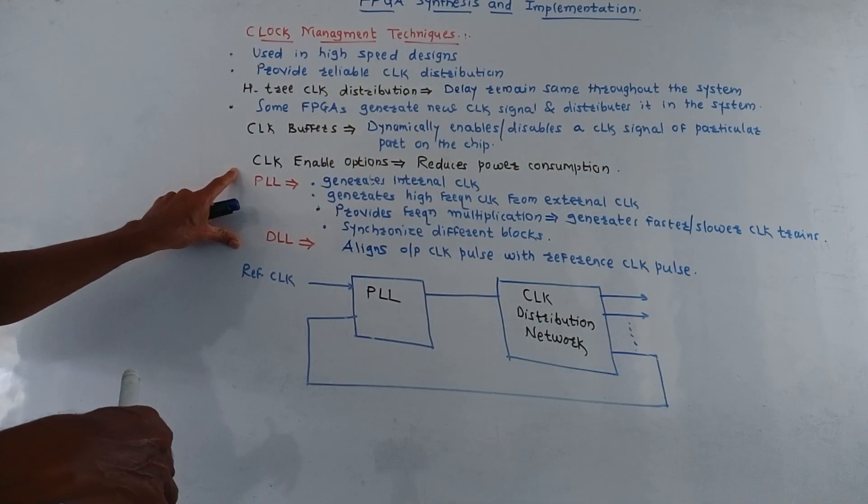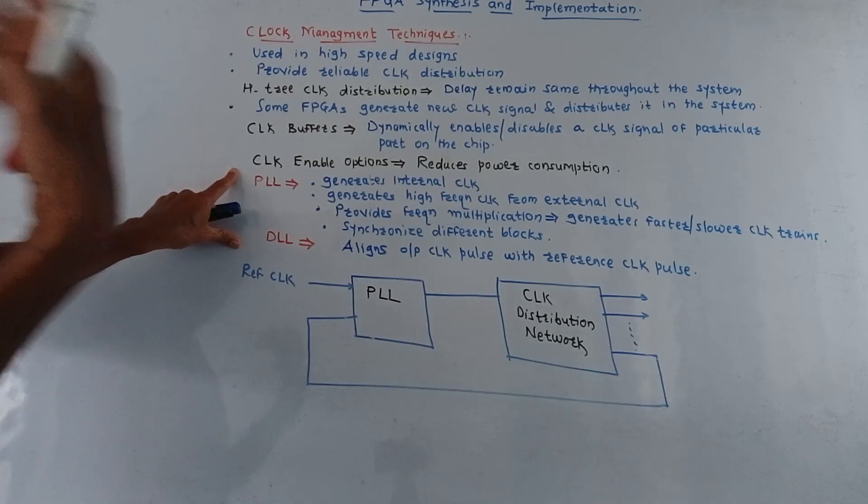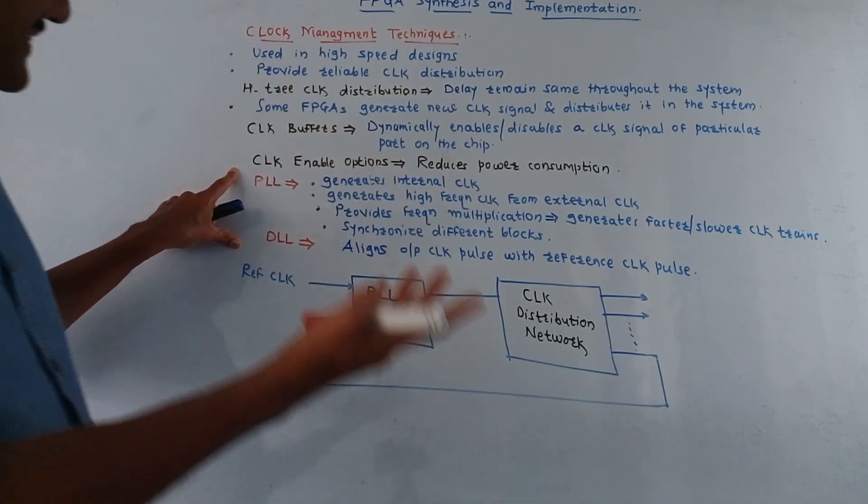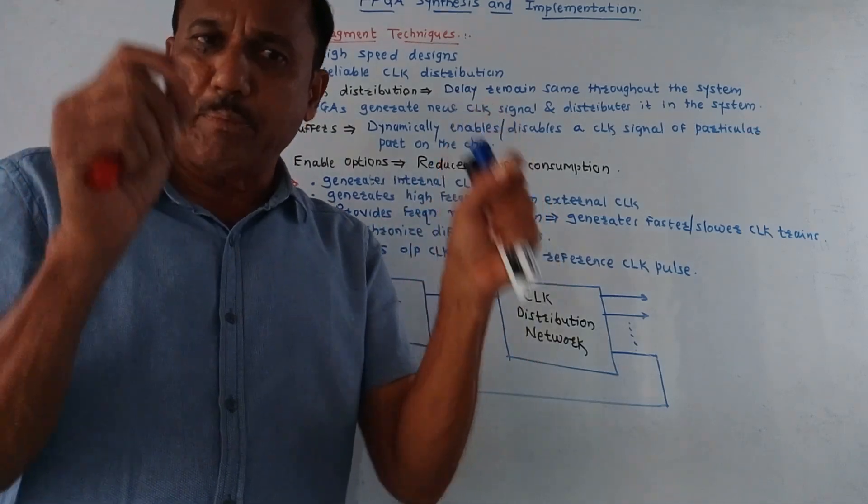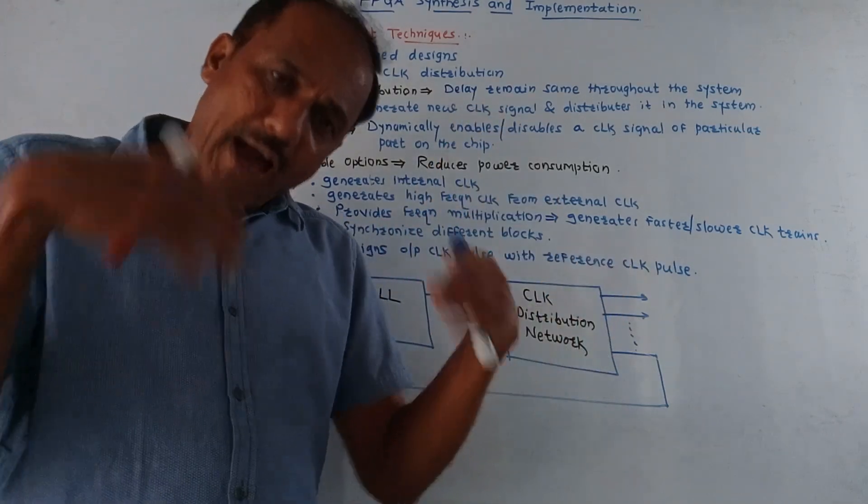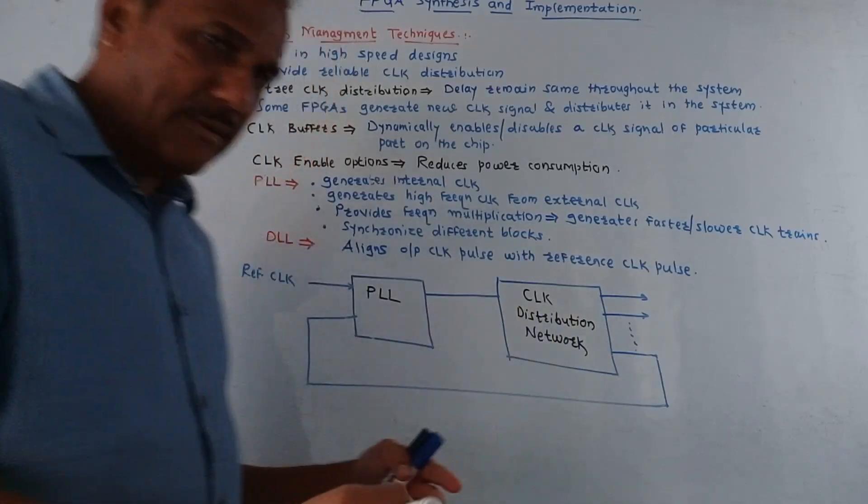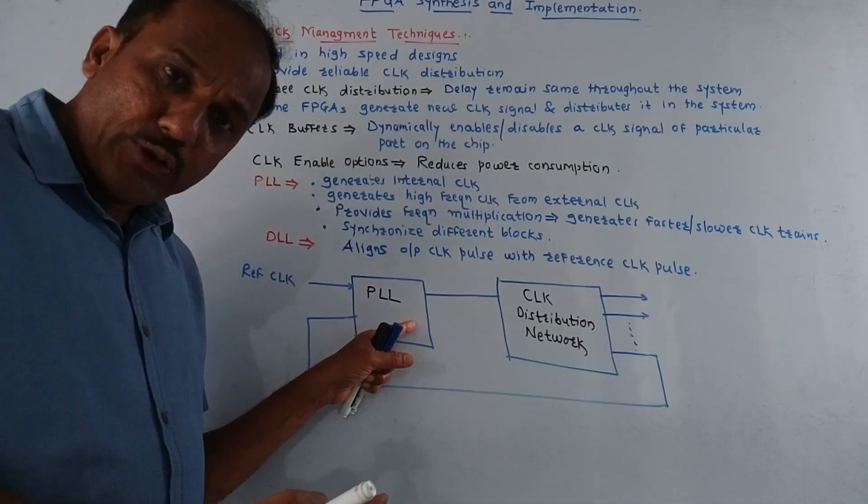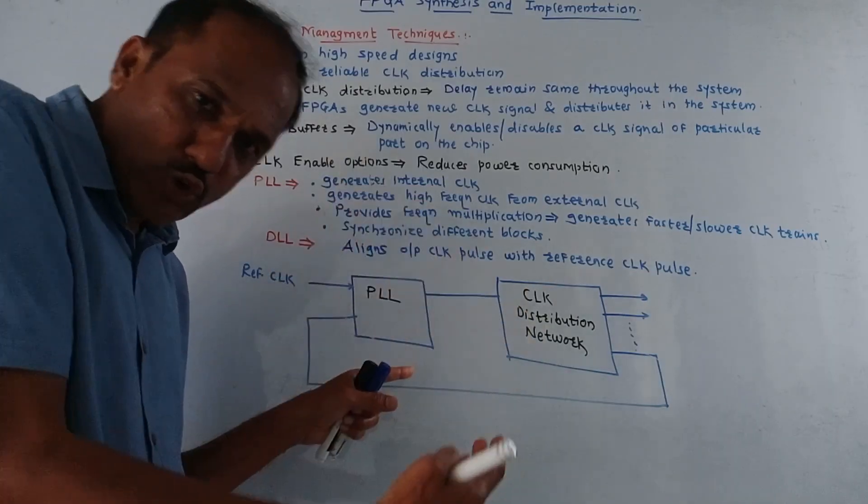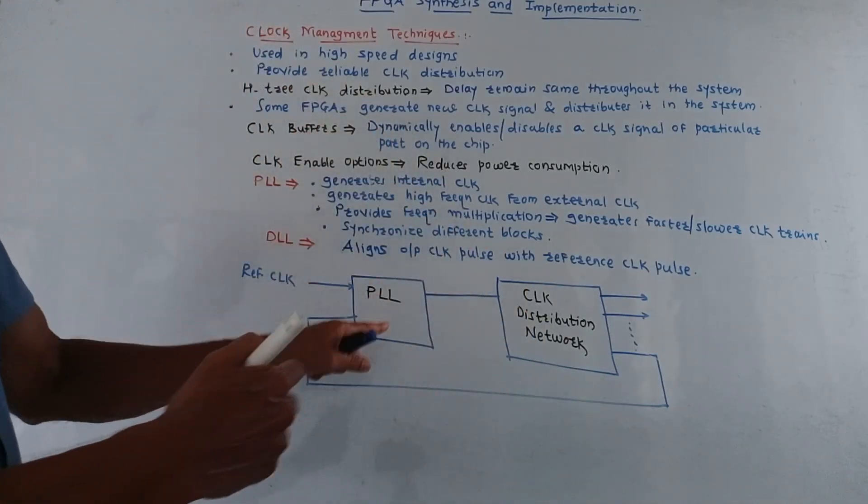Now two more devices we will be using as far as this clock management techniques are concerned: first is phase lock loop, that is PLL. You have studied PLL in earlier subjects. Presently this is the block diagram of how the PLL is implemented and used for the clock management in case of FPGA.